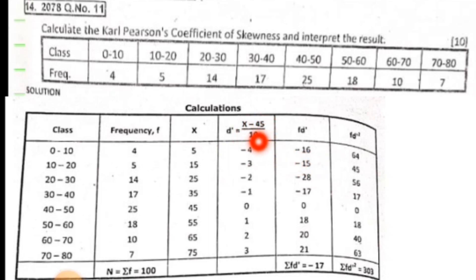Computing d' values: d' equals x minus 45 upon 10. For x equals 5, d' equals minus 4. For 15, d' equals minus 3. For 25, d' equals minus 2. For 35, d' equals minus 1. For 45, d' equals 0. For 55, d' equals 1. For 65, d' equals 2. For 75, d' equals 3. Then fd' values: 4 times minus 4 equals minus 16, 5 times minus 3 equals minus 15, 14 times minus 2 equals minus 28, 17 times minus 1 equals minus 17, 25 times 0 equals 0, and so on. The summation of fd' is minus 17.